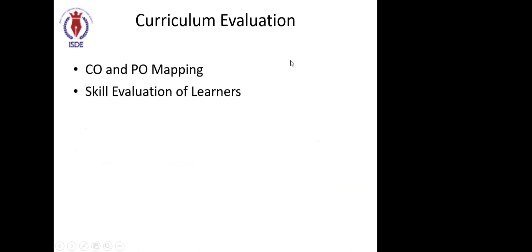The next aspect is curriculum evaluation — how are you going to evaluate the curriculum? Is curriculum evaluation necessary? Yes, it's more than necessary. There should be two ways of evaluation: once you have delivered a particular unit, there should be an intermediate evaluation check. The CO-PO subject and program objective mapping should be there, and skill evaluation — skill evaluation is not submissive assessment. It's not about completing each unit and doing a formal test.